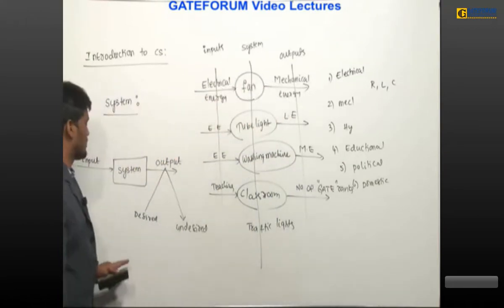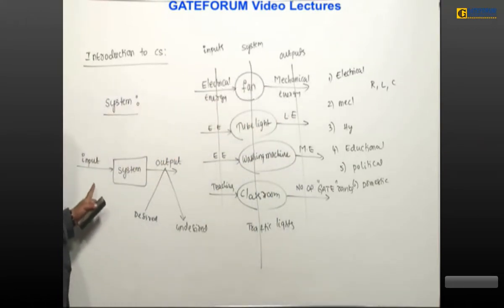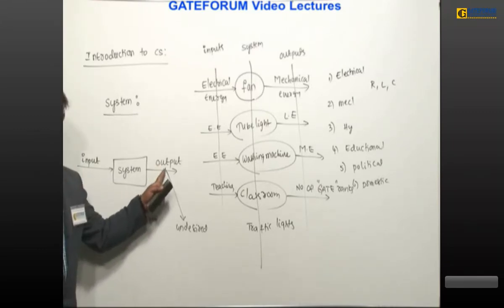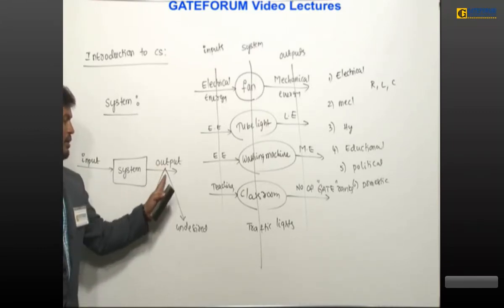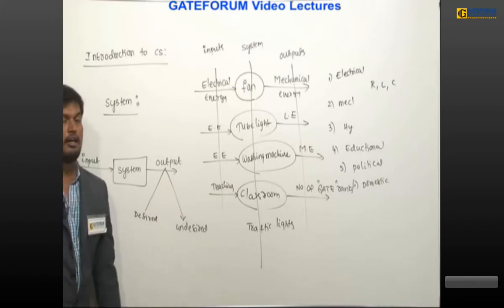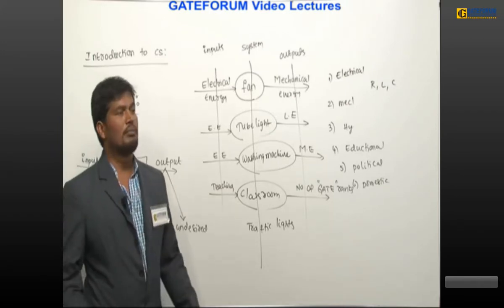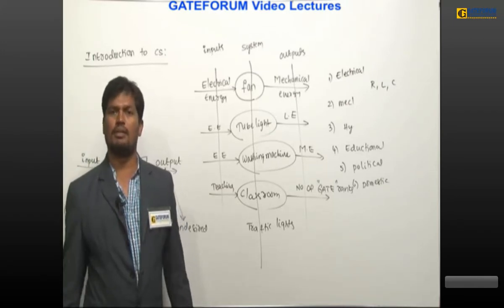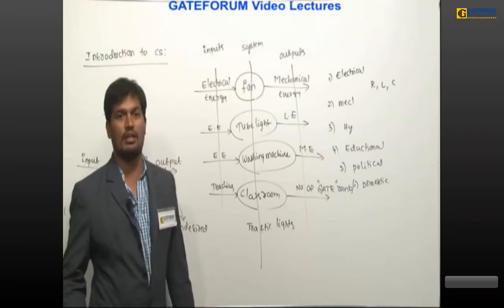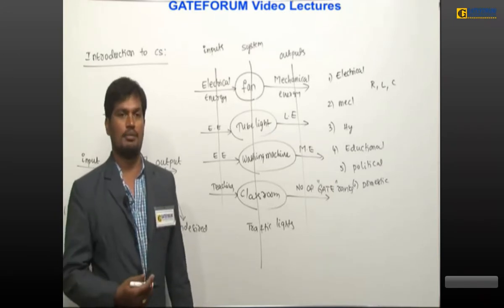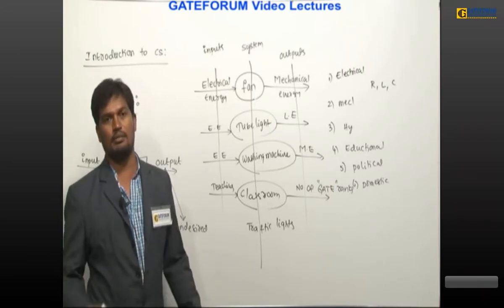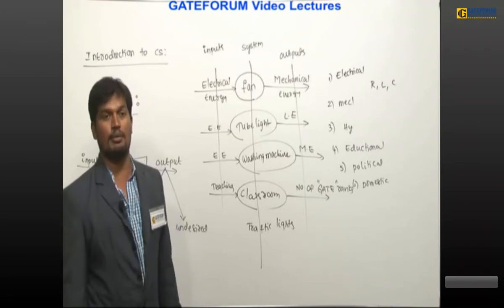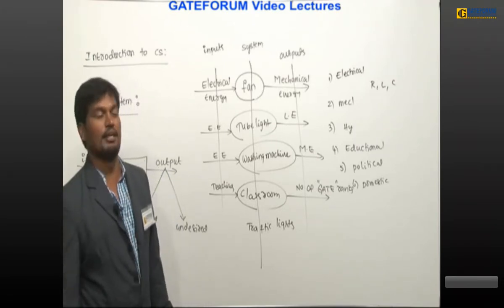The block diagram of a system has an input, it processes and gives an output. The output may be desired or undesired.